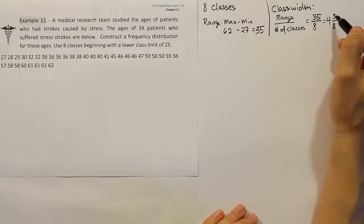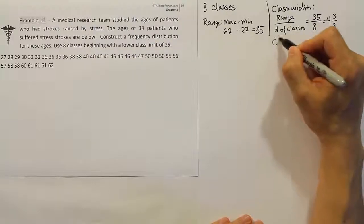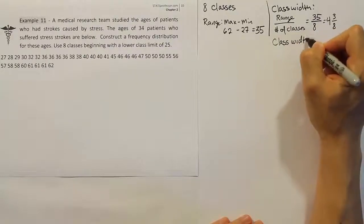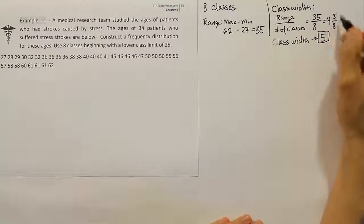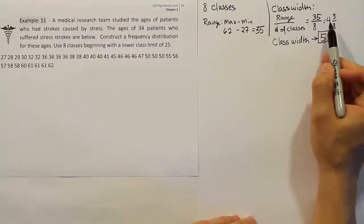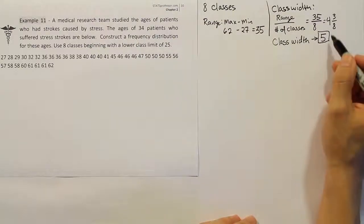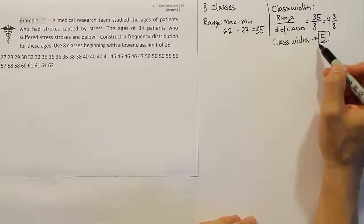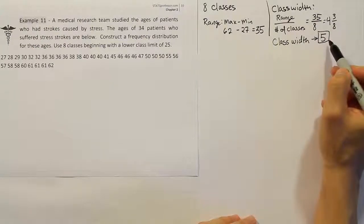This result is a fractional value, so we need to add a little space. We generally round this answer up — if it's a decimal or fraction, we go up to the nearest whole number. So our class width will be five. Why five? Because it's a nearby whole number. You do not want to round normally to four, because you won't have enough space to fit all your data values in the table.